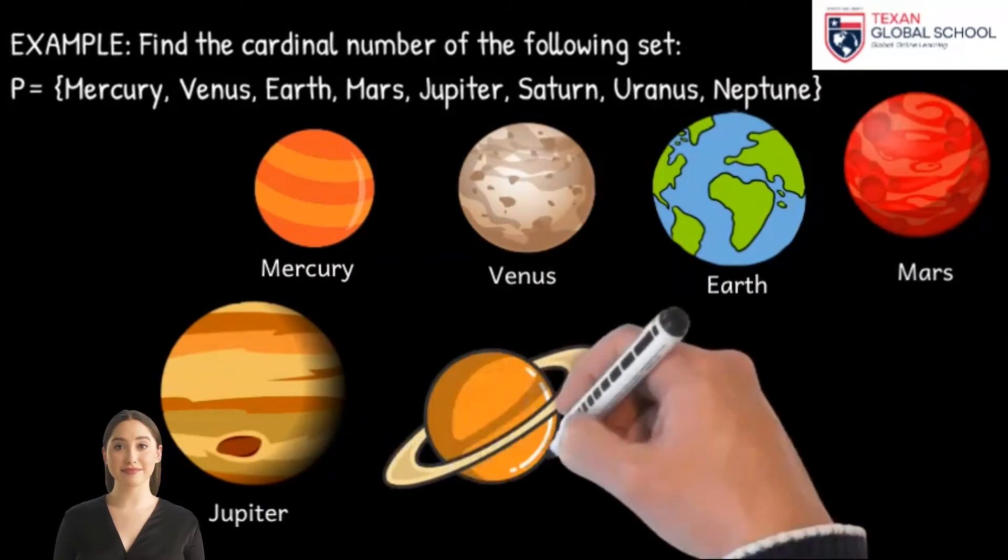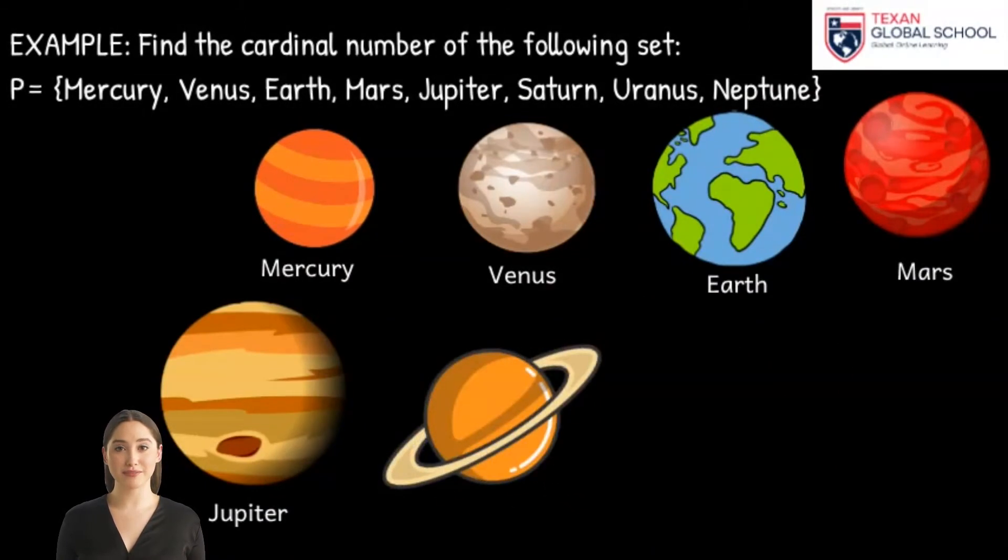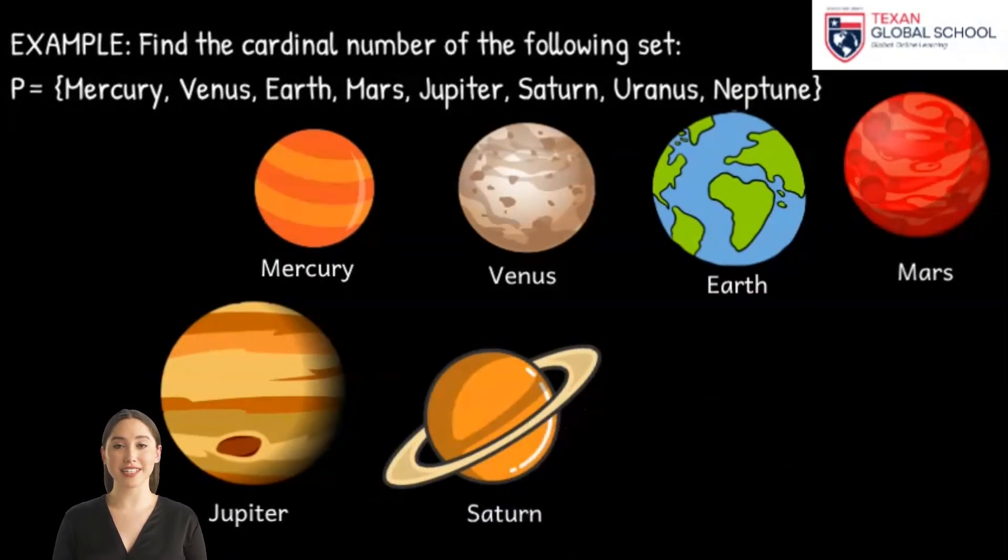Mercury, Venus, Earth, Mars, Jupiter, Saturn, Uranus, and Neptune.